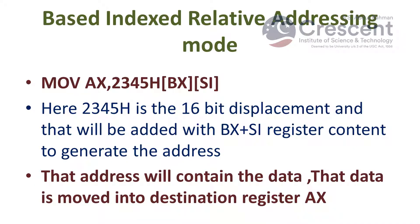Based indexed relative addressing mode — an example is MOV AX, [BX+SI+2345H], where 2345H represents the 16-bit displacement value. That displacement is added with the content of BX register, and then added with the SI register content to generate the address. The data specified at that address is moved into destination register AX.